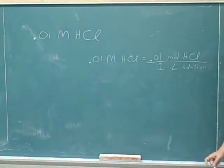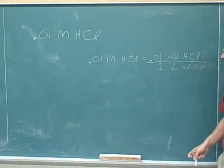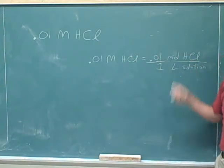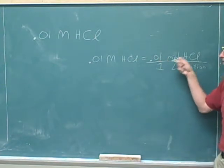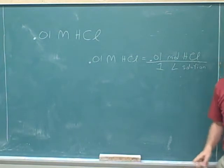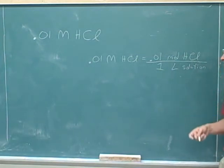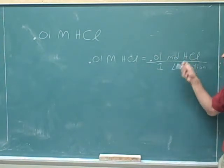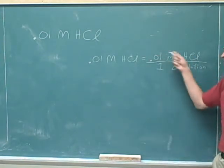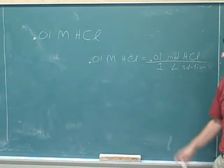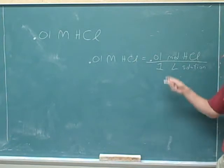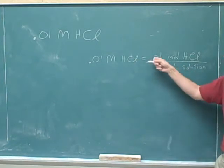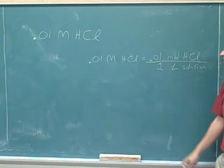If you have a 0.01 molar hydrochloric acid solution, it means that if you measured out one liter of the solution, it would contain 0.01 moles of hydrochloric acid. Remember, moles is just a measure of an amount. This is hypothetical — it doesn't mean we've actually measured out one liter. But if we did have one liter, it would contain 0.01 moles of hydrochloric acid.